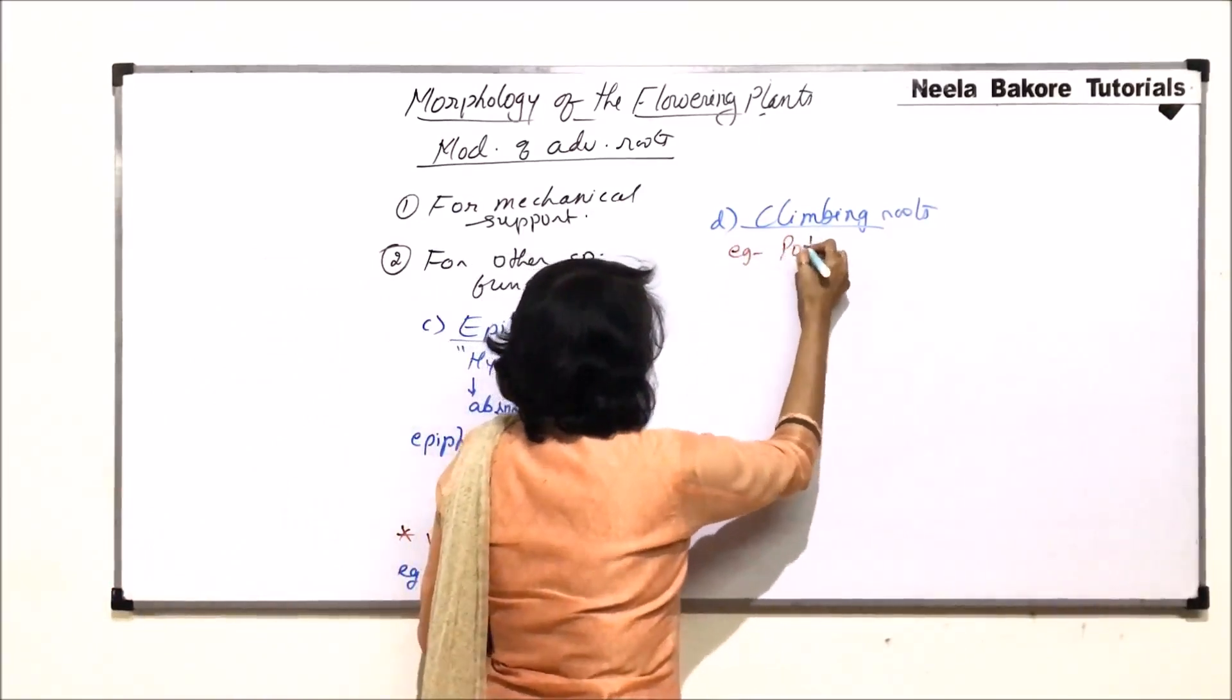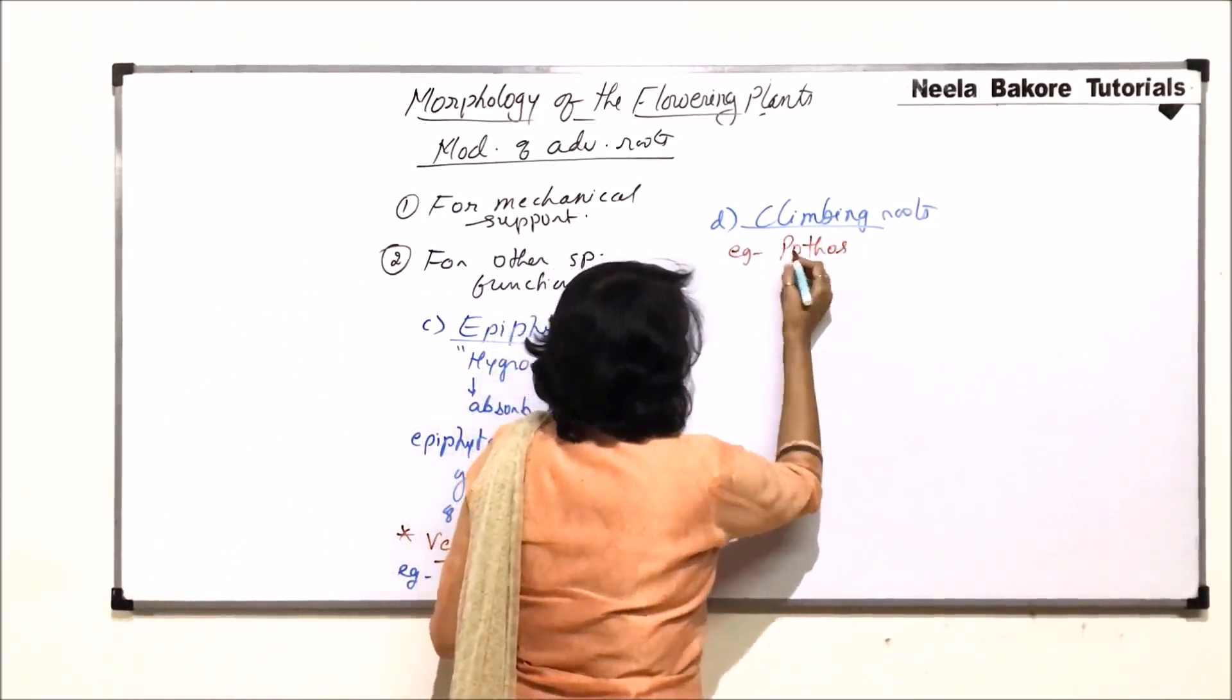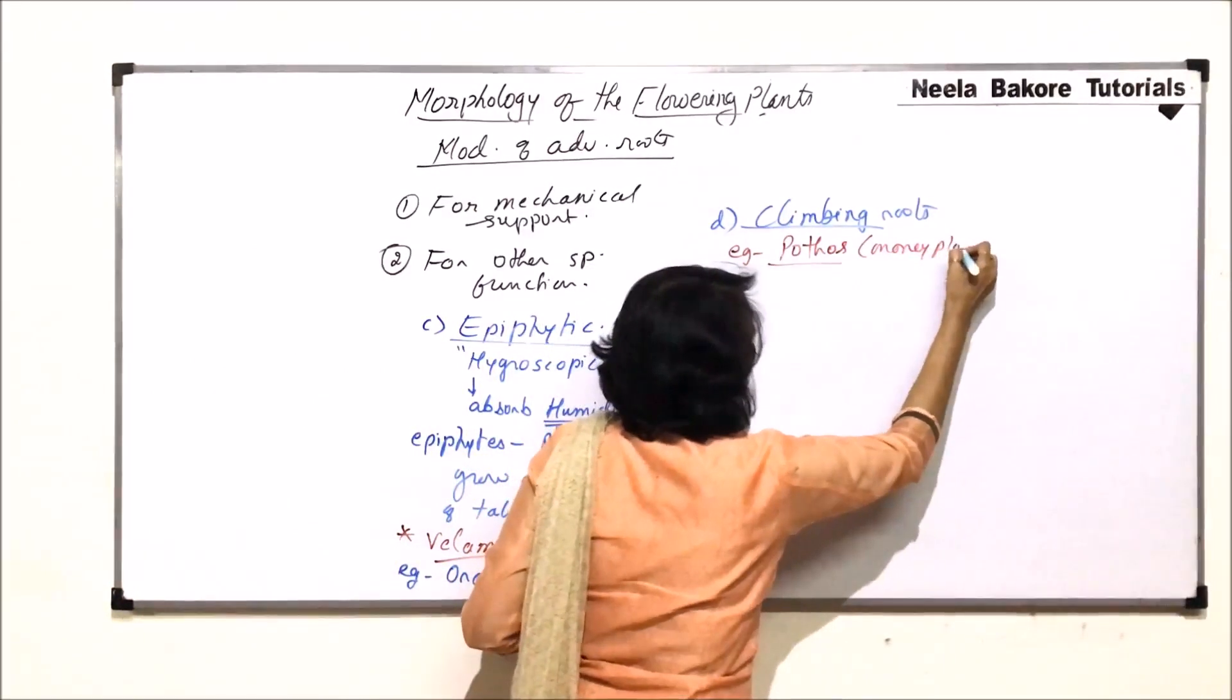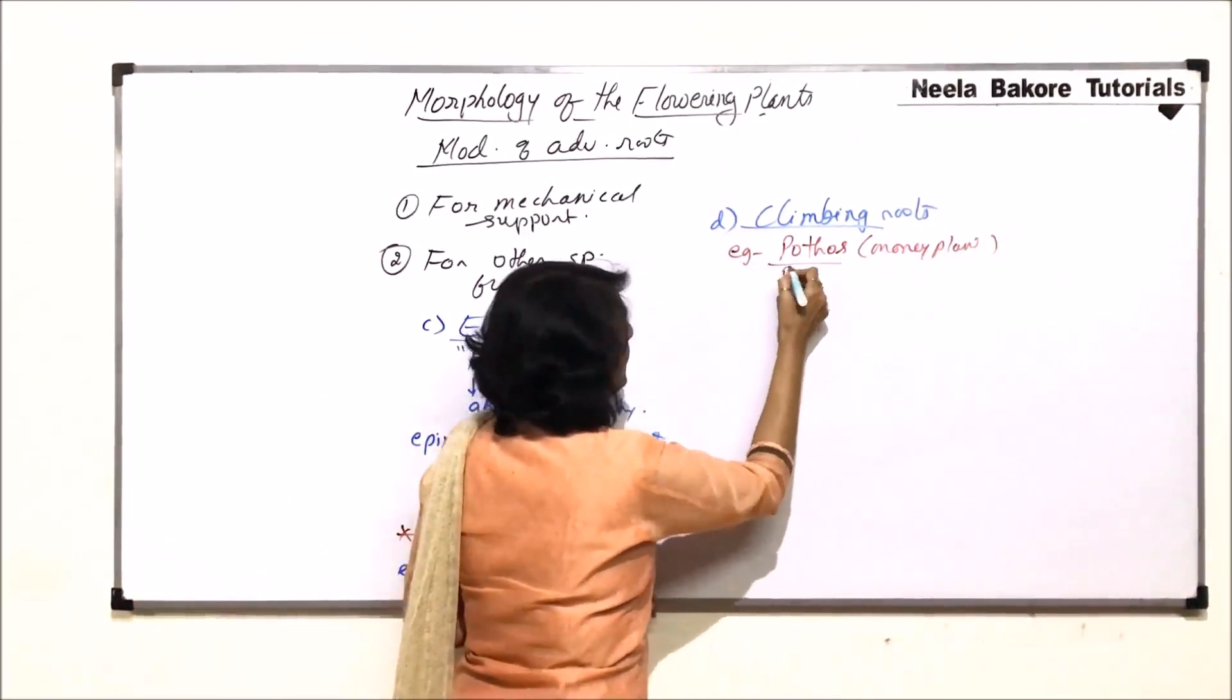Example is pothos. Pothos is money plant. Or, piper betel.